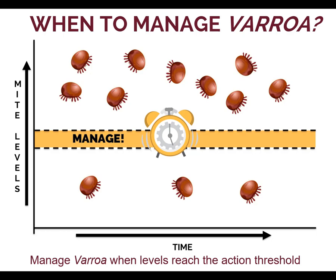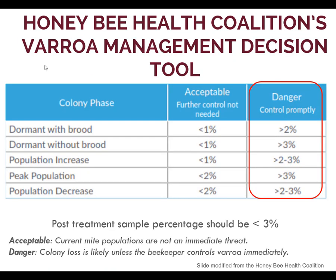Beekeepers should manage Varroa when levels reach their action threshold. A threshold of 3% infestation or 3 mites per 100 bees has commonly been used, but your threshold may need to be different depending on your location and the time of year. The Honey Bee Health Coalition's Varroa Management Decision Tool has examples of acceptable and dangerous mite levels based on the colony's population and brood phase. Beekeepers should try to control Varroa before they begin to damage the colony.